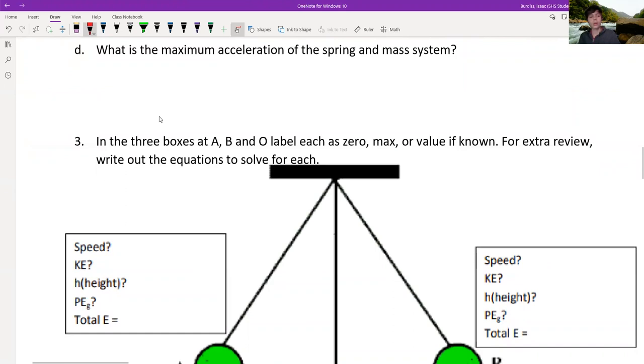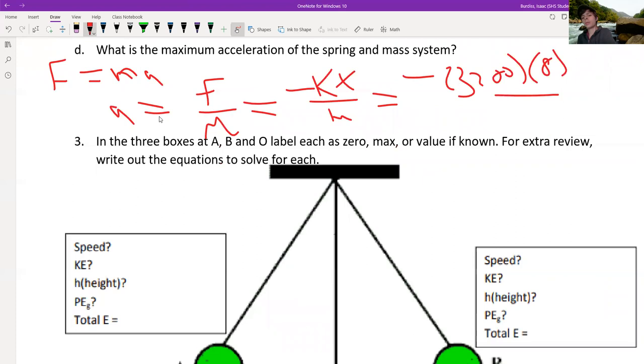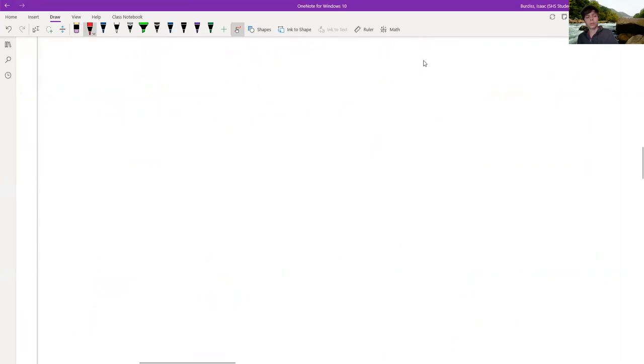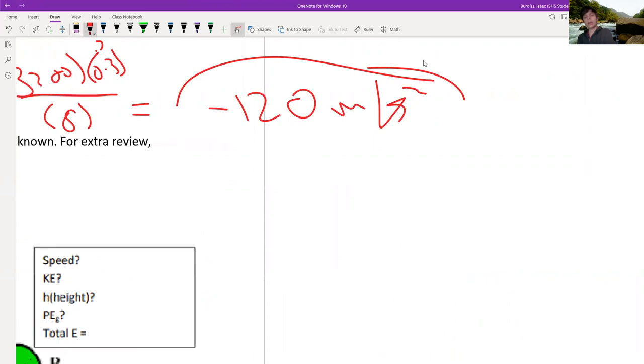What is the maximum acceleration? Let's see. What do we do? Well, force equals mass times acceleration. So a equals force divided by mass. And we can change force to this using Hooke's law. So we have 3200, and then we have the distance, which is 0.3, divided by mass, which is 8. And when you do that, you get negative 120 meters per second squared.